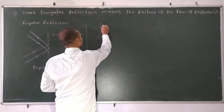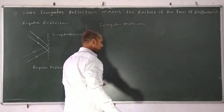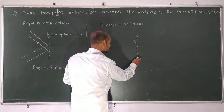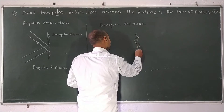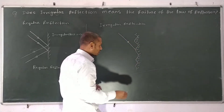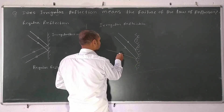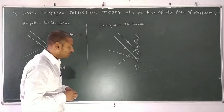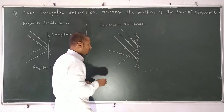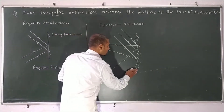In irregular reflection, the surface is not smooth. If some parallel light rays are coming to incident on that surface, after reflection they do not go parallel to each other. You can see there are so many parallel light rays incident on that surface, but after reflection they do not go parallel — irregular reflection takes place.